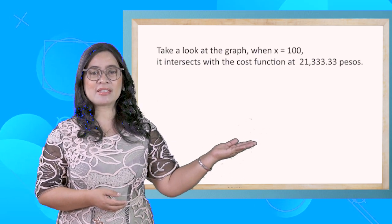Take a look at the graph. When x = 100, it intersects with the cost function at 21,333.33 pesos. Would you like to produce more units? It's up to you.